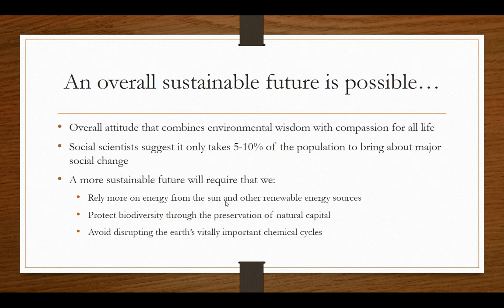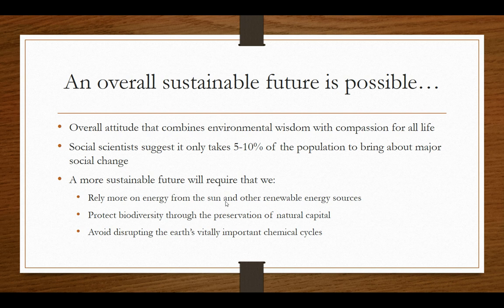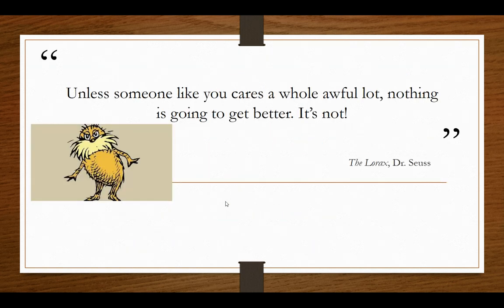Social scientists believe a sustainable future is possible because it only takes five to ten percent of the population to bring about major social change. The most affluent countries represent 17% of the global population — if we get all those people on board, we could bring about major change. That will entail relying more on solar energy, protecting biodiversity, and avoiding disruption of natural cycles. Sustainability means meeting our culture's current needs without compromising future generations' ability to meet their needs.